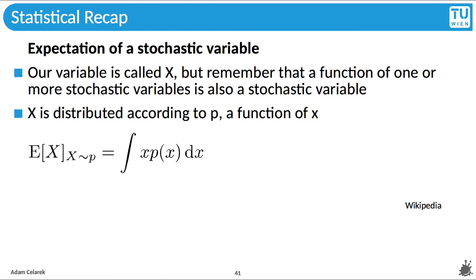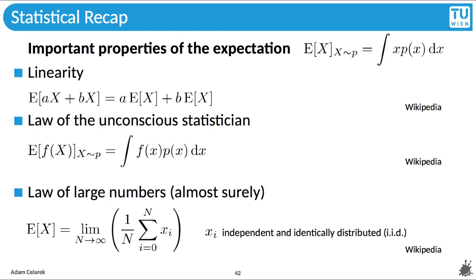And then we have the expectation of a stochastic variable. This is also called expected value, or simply the mean or the average. The expectation itself is not a stochastic variable, it's a value. Given a stochastic variable x, which is distributed according to the PDF p, the expectation, denoted by a capital letter E, is the integral of x times p of x. The expectation has some properties and laws that we will use in our proof. It is linear, which means that the expectation of a linear combination of stochastic variables is a linear combination of expectations. For example, expectation of a times x plus b times x is a times expectation plus b times expectation. a and b are constants here.